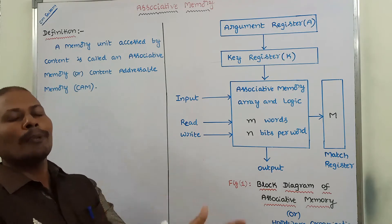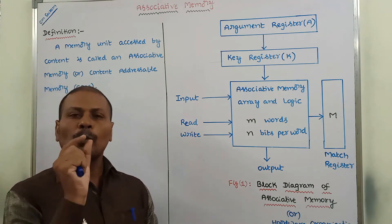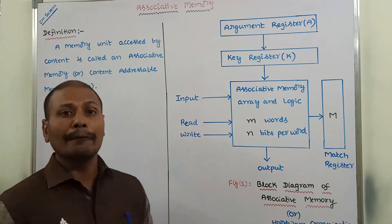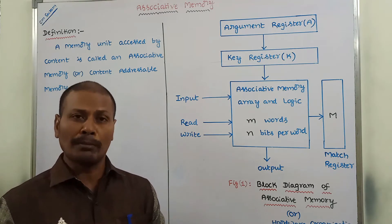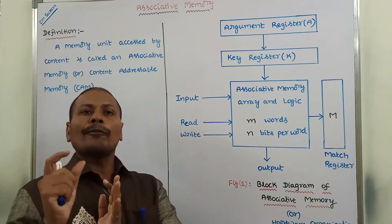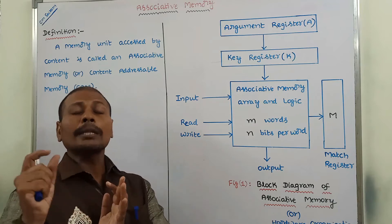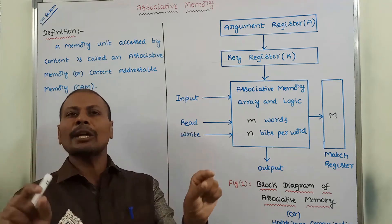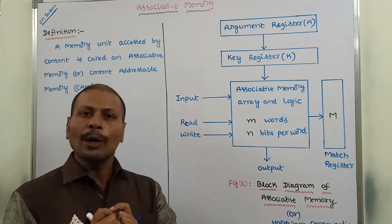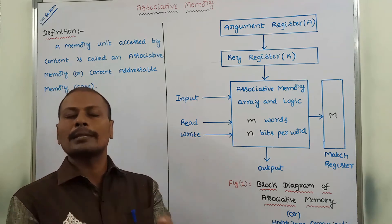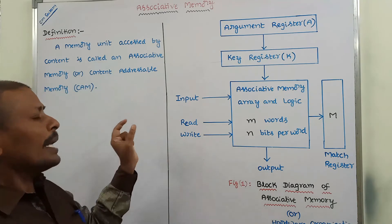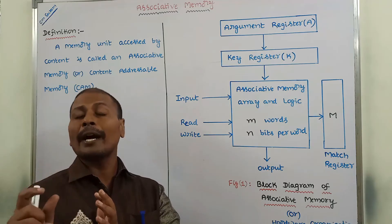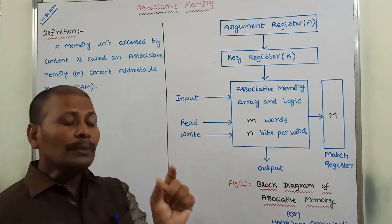Next, how to perform the read operation? Suppose we want to read a particular information from a given word in the associative memory. The content of the memory word, or a part of the memory word, is specified. That means either the entire content of the word is read or a part of the word is also read. The memory locates all the words in the memory which match the specified content from that word.